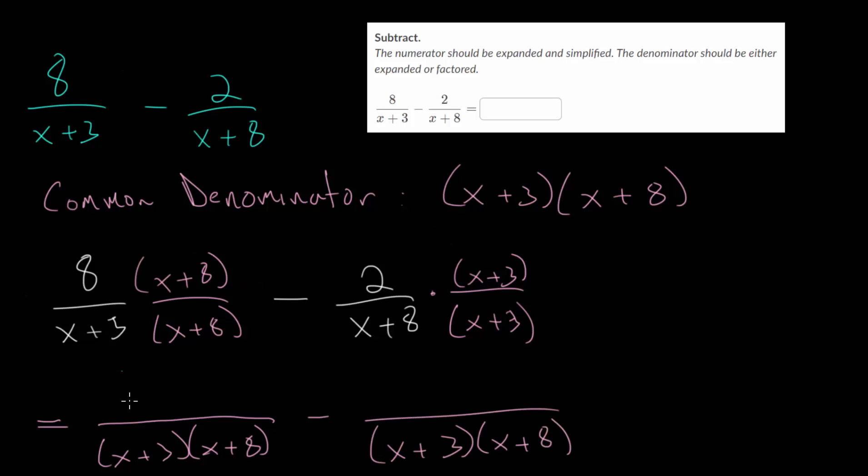And from here, their numerators will be different, but we can simplify them and then in the end combine them together. So we have 8 times x plus 8 here, minus 2 times x plus 3. And let's just write all of this as one fraction. And really, you can skip this middle step here once you get good at these and just rewrite it with one denominator.